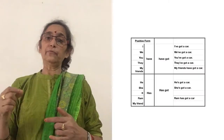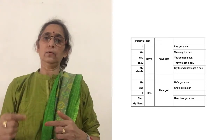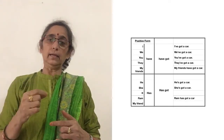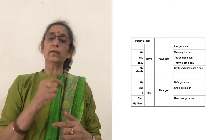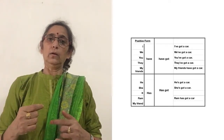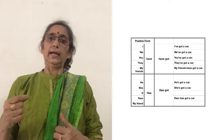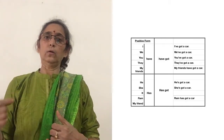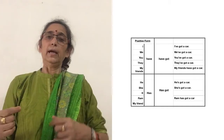When it comes to third person singular — he, she, it, or my friend, any third person singular, or Ram — we say: he has a car or he's got a car, she has a car or she's got a car, and my friend or Ram has a car or Ram has got a car. Both are correct.